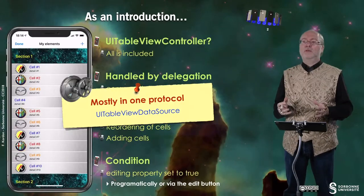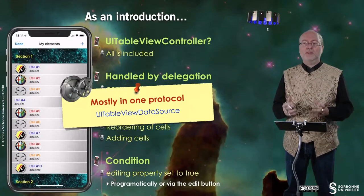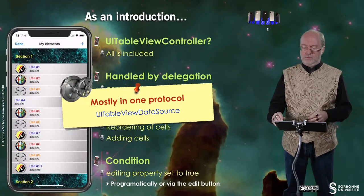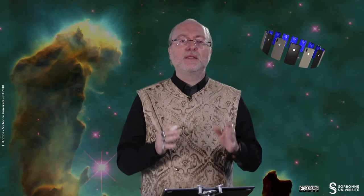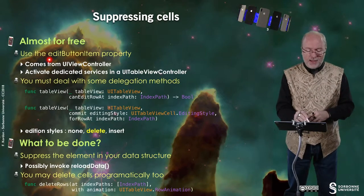Everything is mostly located in one protocol, which is UITableViewDataSource. How do you suppress a cell? Once again, it's almost for free. There is an editButtonItem property that exists.